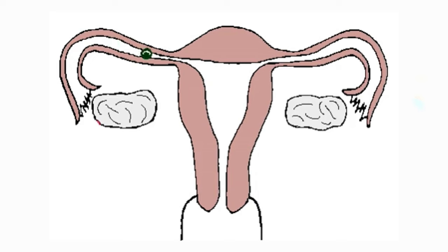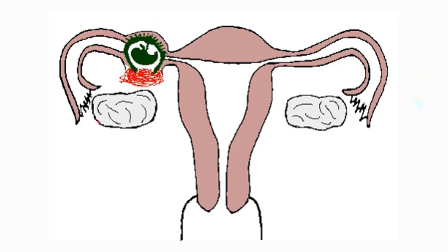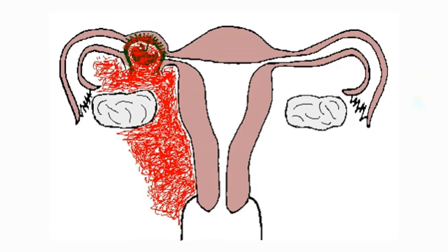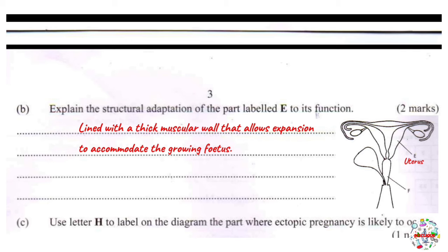This is a very dangerous condition — it can cause the fallopian tube to rupture because the fallopian tube was not constructed to house a developing fetus. This is what is termed ectopic pregnancy. Some of you might be wondering why can't the fertilized egg grow within the fallopian tube instead of the uterus?